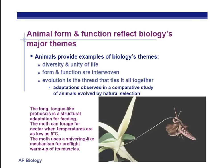Animal form and function reflects biology's major themes. Animals provide examples of biology themes, giving the diversity and unity of life — the differences and similarities between living things. Form and function is a big idea in animals, as well as all of life.